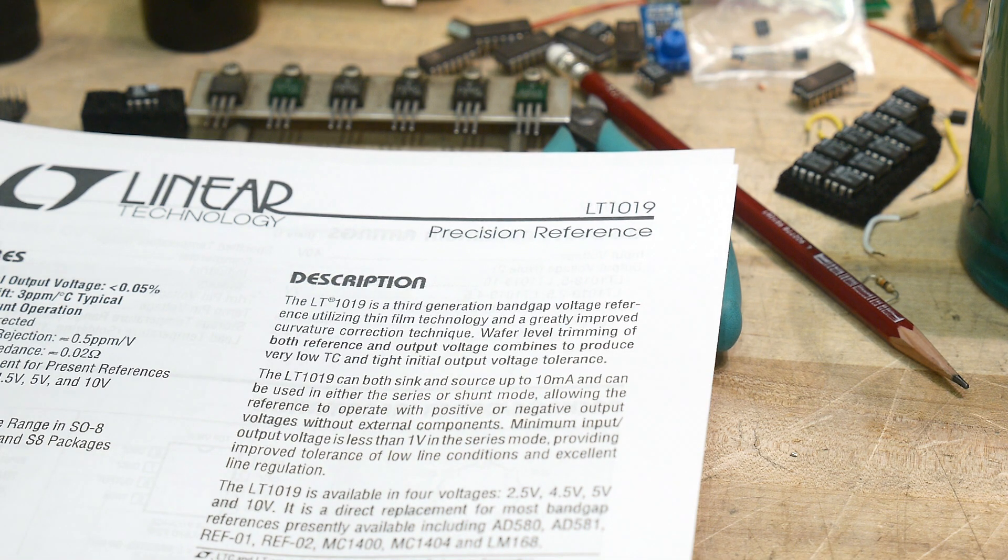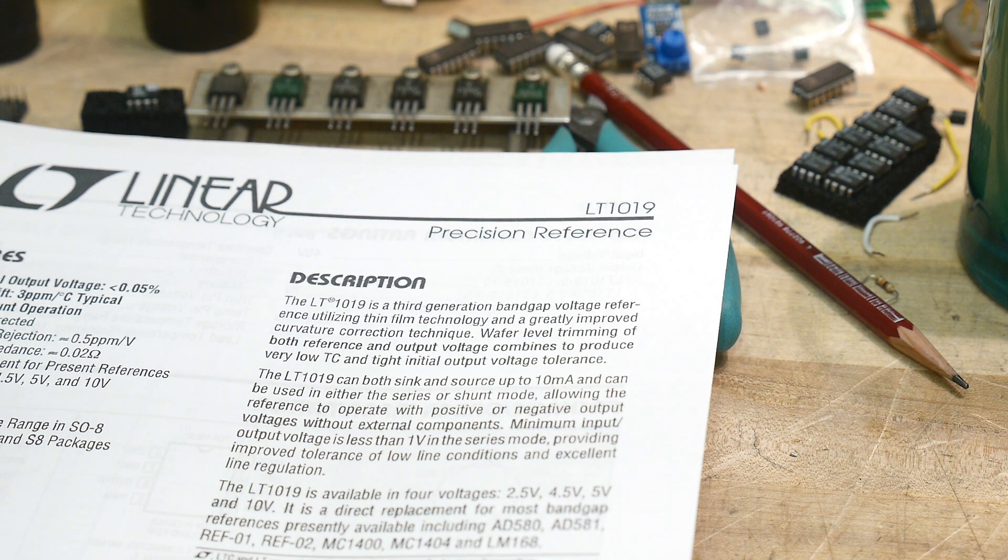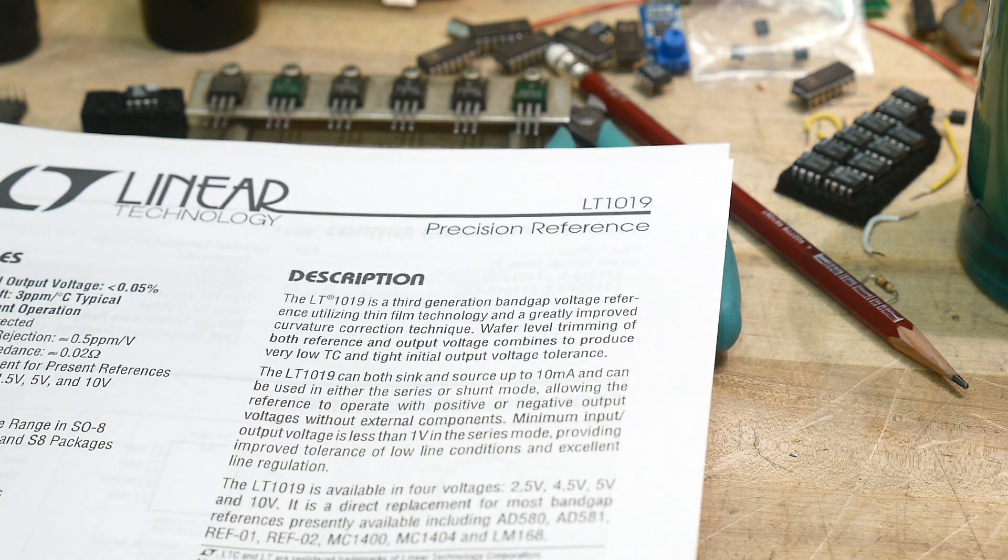So if you put them in a fancy DVM and you calibrate, then that calibration won't change. But it's very difficult to find something that starts from the get-go at a good voltage.